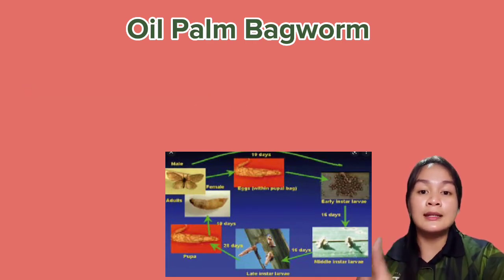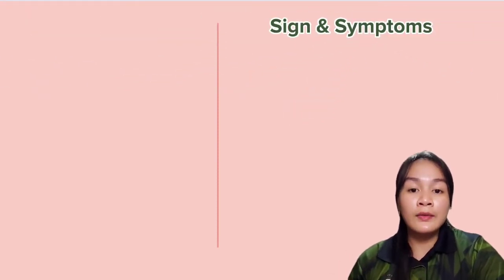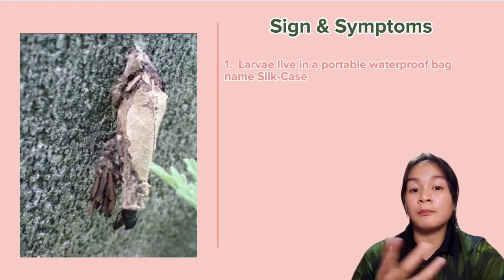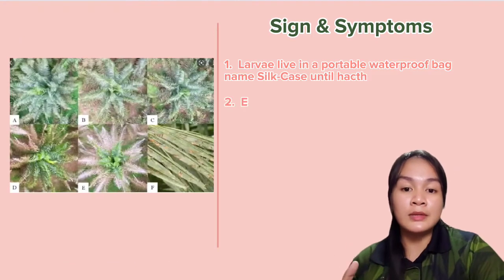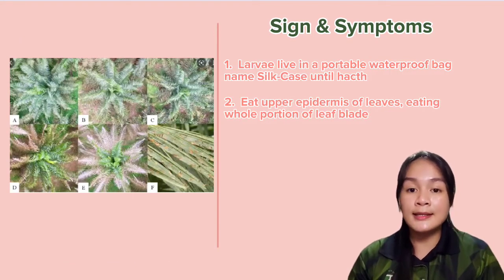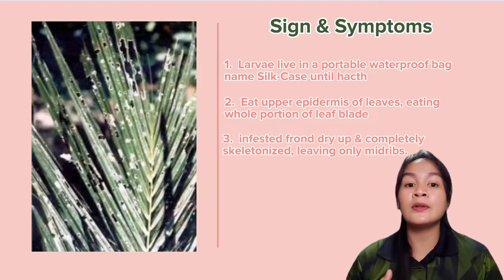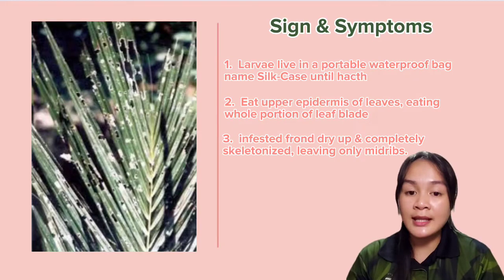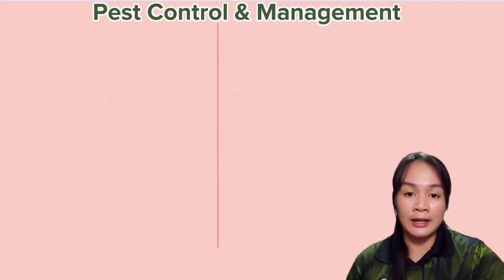The presence of this pest can be recognized through a few signs and symptoms. Larvae build and live individually in a portable waterproof bag named a silk case until they hatch. The larvae will eat the upper epidermis of the leaf as well as eating the whole portion of the leaf blade. Hence, infested fronds will dry up and become completely skeletonized, leaving only the midrib.